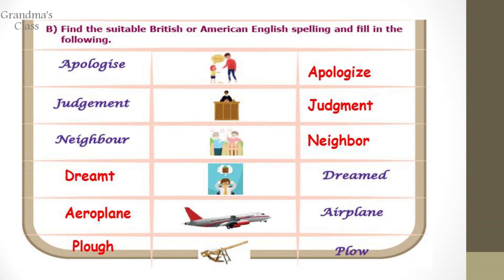Next word: Find the suitable British or American English spelling and fill in the following. Apologise — in British they use S, whereas in America Z is used. Judgement — E is not available in American English. Neighbour — again U is not here in American English. Dreamed — in American English it is dreamed. In British English, aeroplane. In American English it is airplane. Next one is plough — in American English it is plow.